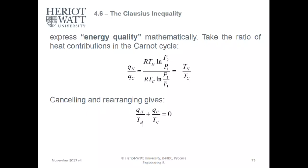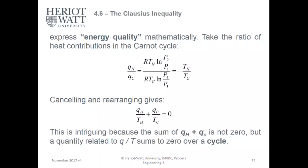Hence, canceling and rearranging gives you QH over TH plus QC over TC equals zero. This is intriguing because the sum of QH plus QC is not zero, but the equality related to Q over T sums to zero over a cycle. The temperature energy balance becomes zero for an ideal system over the full cycle because you're heating and cooling, heating and cooling.